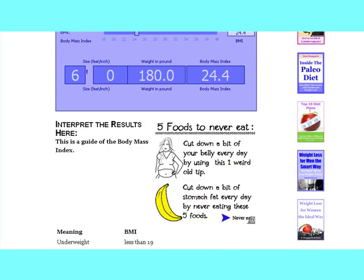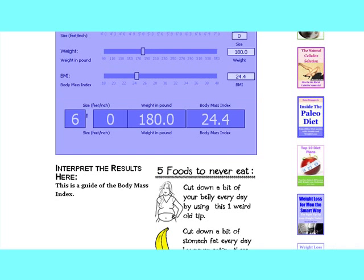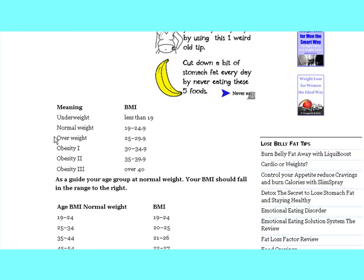Just drop down a little bit further. There's a bit of a guide there on basically what the BMI is. So 25, let me say 24.4, which in this case would fall within the normal range, which is a healthy BMI rate.